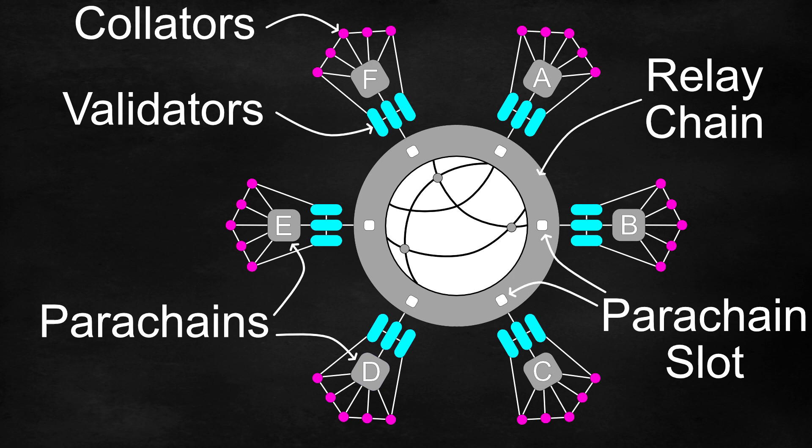In simple terms, that is how parachains interact with the relay chain on Polkadot and Kusama. We will now go over some more detail regarding the role of collators and validators.